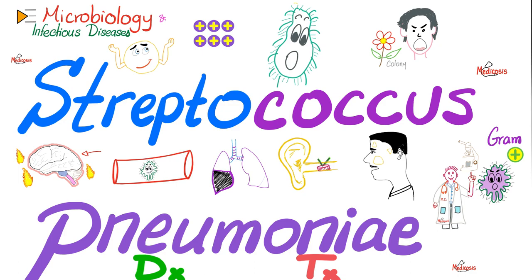Previously, we talked about Staph aureus, Staph epidermidis, Staph saprophyticus, Streptococcus pyogenes, the very dense group of Streptococci, and in the last video, we talked about Strep pneumo, the diseases and the characteristics.